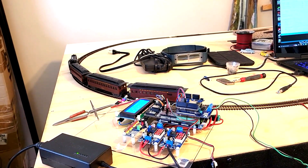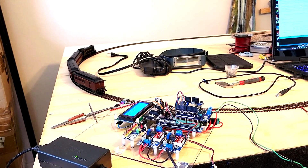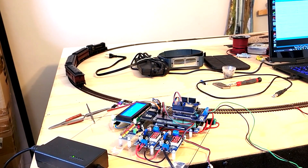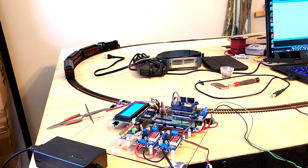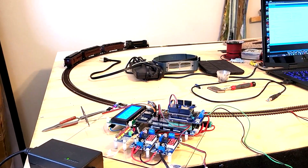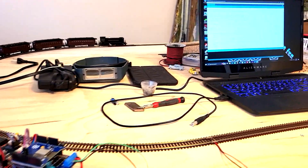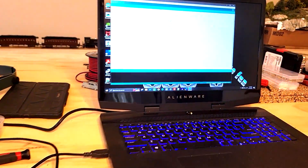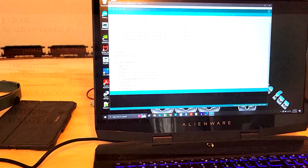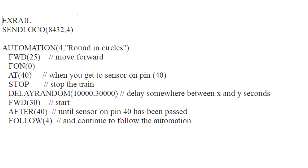It then randomly pauses for anywhere between 10 to 30 seconds and then starts back up again, continuing around the loop until you shut it off. Here's an example of the instructions needed for this operation, contained in the tab myAutomation.h.